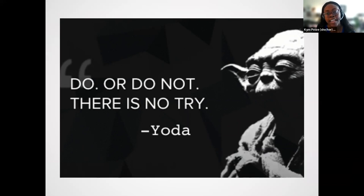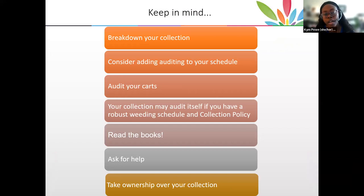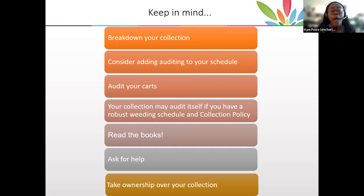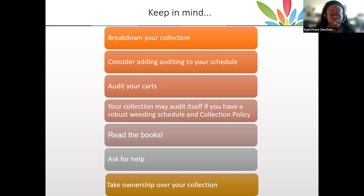Do or do not, there is no try. By doing the work, you are doing the work. It is a never-ending process — as long as books are being published, as long as we are buying books, we are going to be doing this. Do not feel like you are not doing enough if you are doing something. Break down your collection — don't look at the whole thing and think you have to audit 10,000 books. Just start with picture books, author's last names A through C. Consider adding auditing to your schedule, audit your carts when buying, and if you have a robust weeding schedule and are constantly auditing your carts, your collection is going to audit itself. Read the books if you can. Phone a friend, ask for help, and take ownership of your collection.